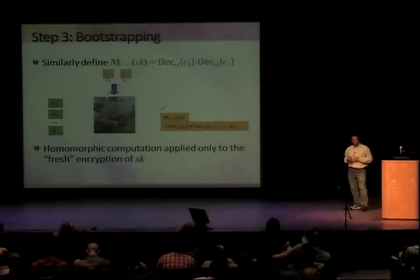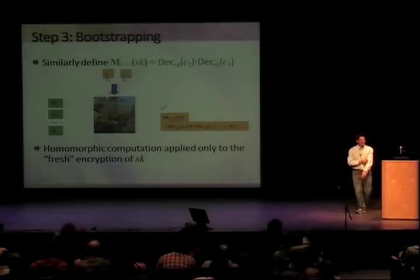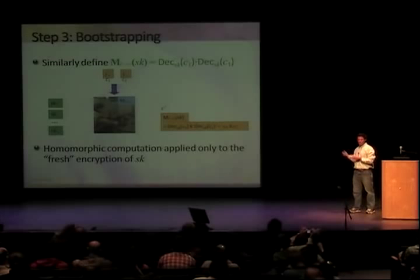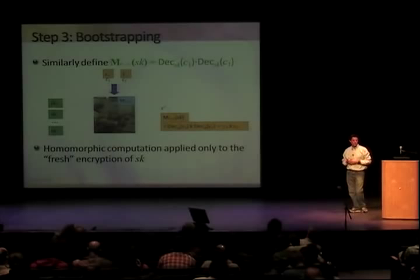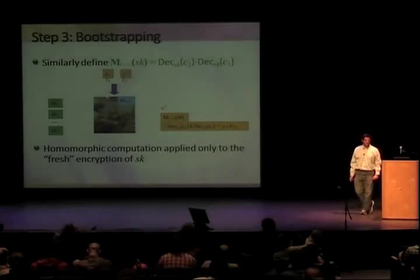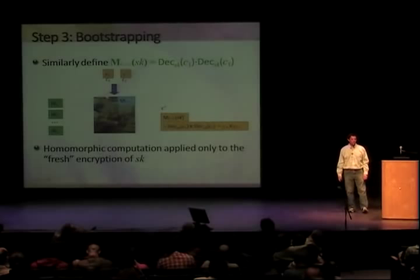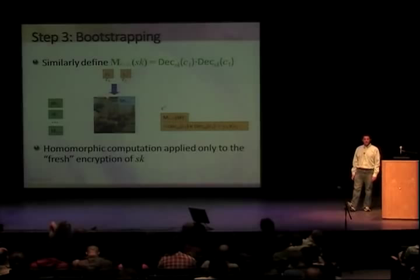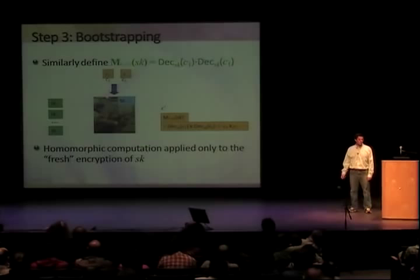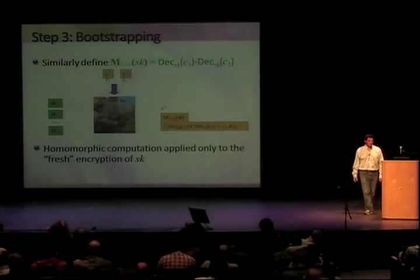To recap bootstrapping: we have two orange ciphertexts encrypting y1 and y2. We don't multiply them directly. We use them to define the function m_{C1,C2}, build machinery to evaluate it on encryptions, apply it to the encrypted secret key bits in our public key, and get out a new ciphertext encrypting the product of y1 and y2 — and we did all of that without ever processing the orange ciphertexts.